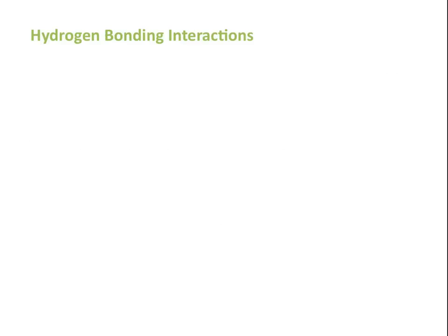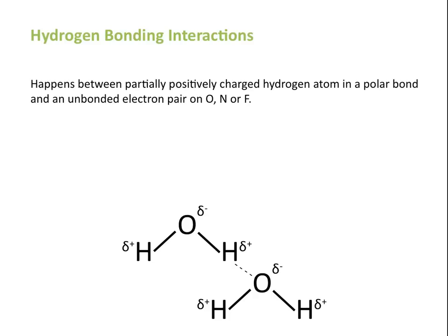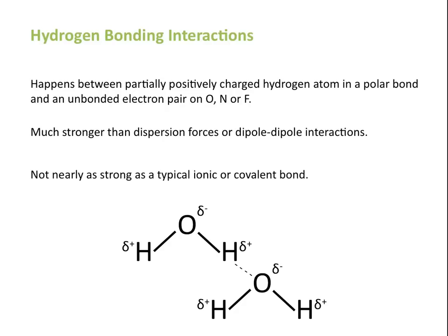Another type of intermolecular force is hydrogen bonding. Hydrogen bonding interactions are a special type of dipole-dipole interactions and they happen between the partially positively charged hydrogen atom in a polar bond and an unbonded electron pair on oxygen, nitrogen, or fluorine. Hydrogen bonds are much stronger than dispersion forces or dipole-dipole interactions, which is why this type of interaction is called a hydrogen bond. Although hydrogen bonds are not nearly as strong as a typical ionic or covalent bond, so the nomenclature may be a little bit misleading.